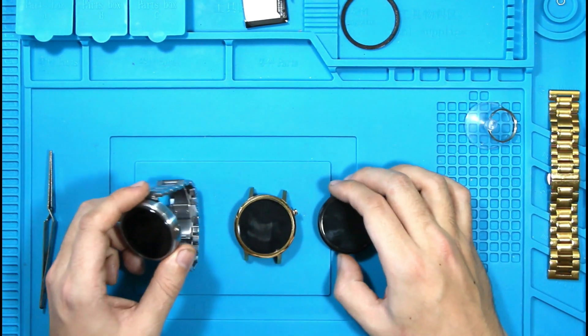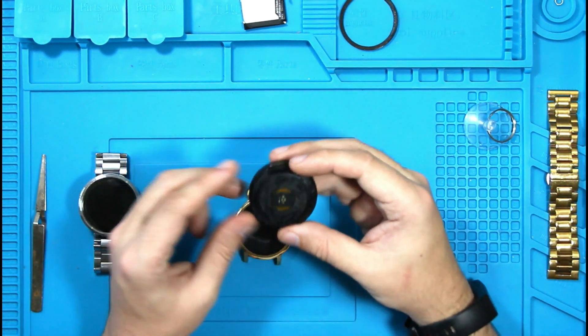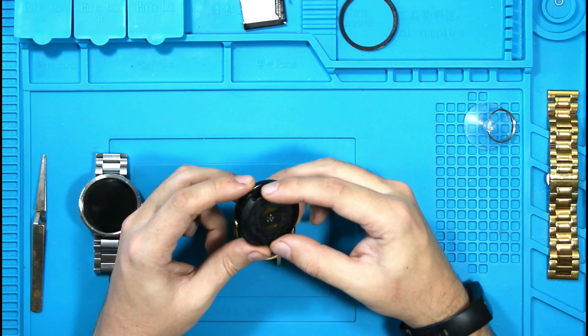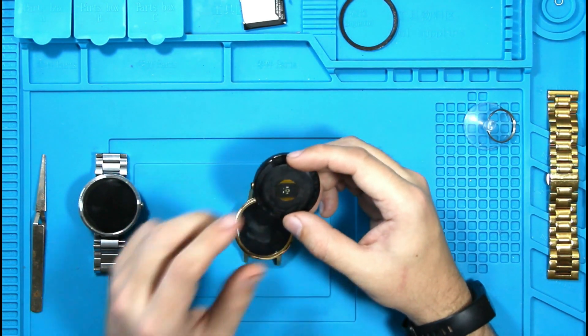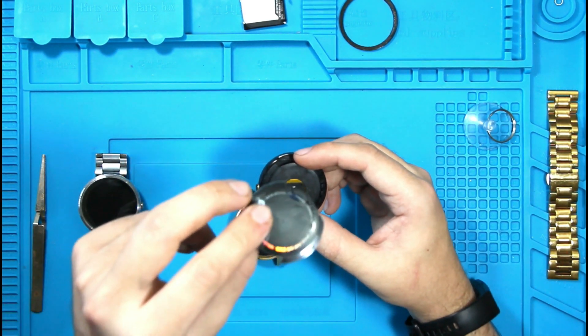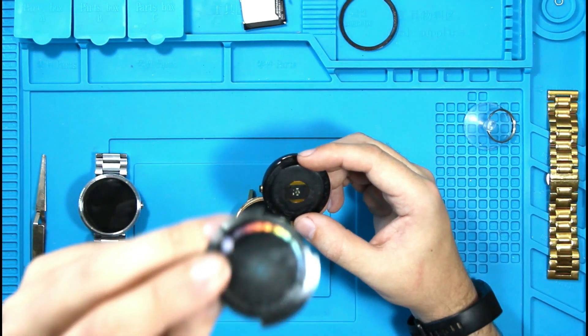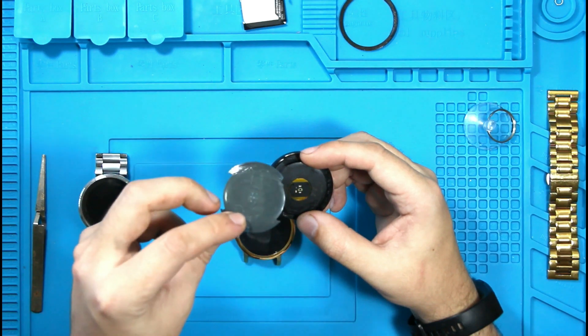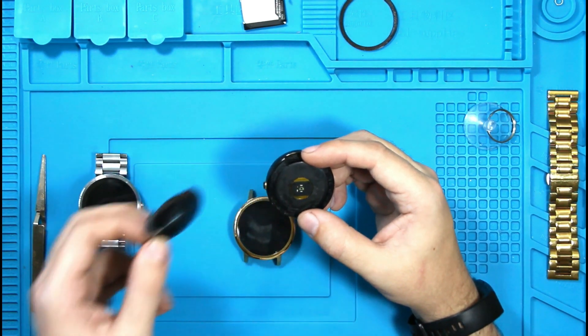So let's get cracking on these. So the main difference between the first gen and the second gen is when you remove the back of the first gen, this whole part came off. And it's very easy to break this part. And it's very hard to find it to replace it. So that sucked.